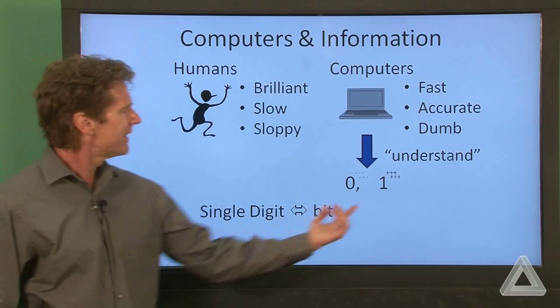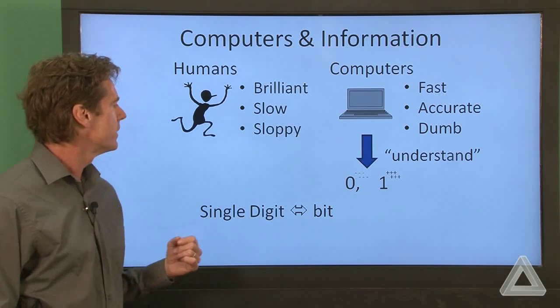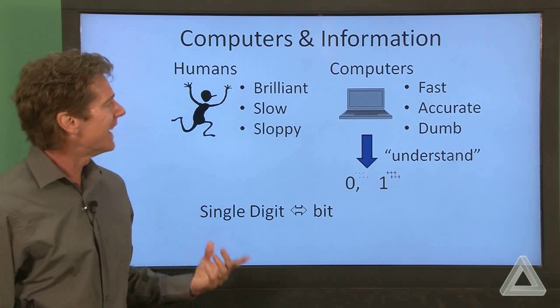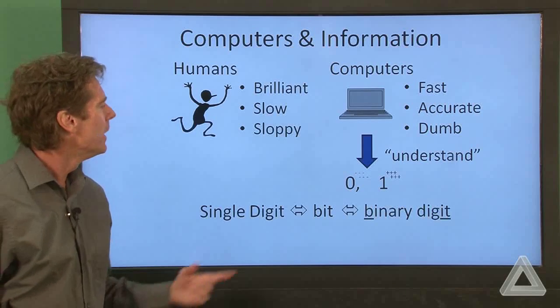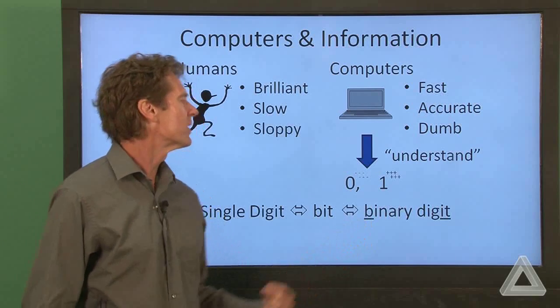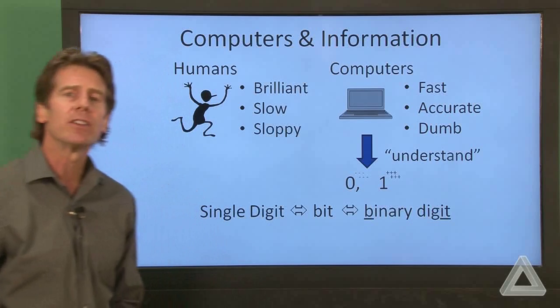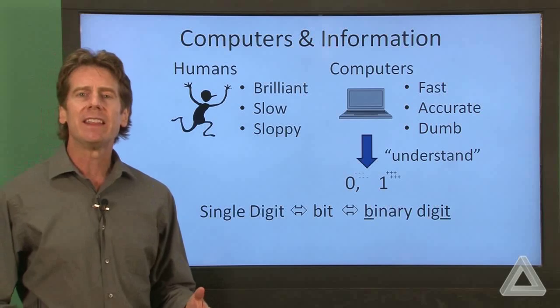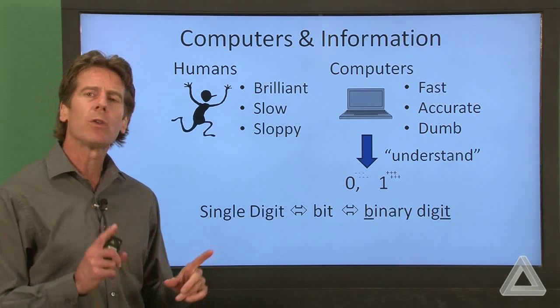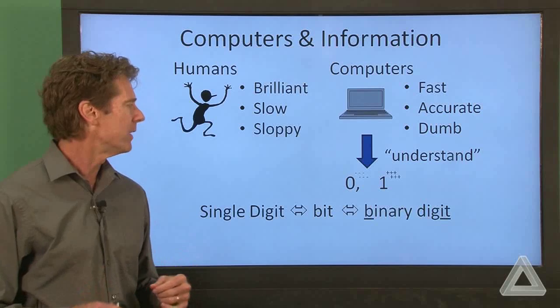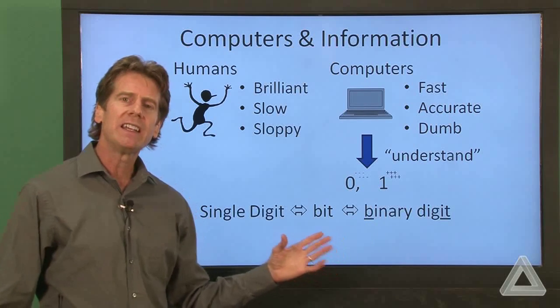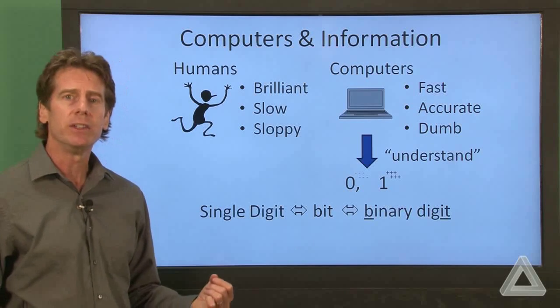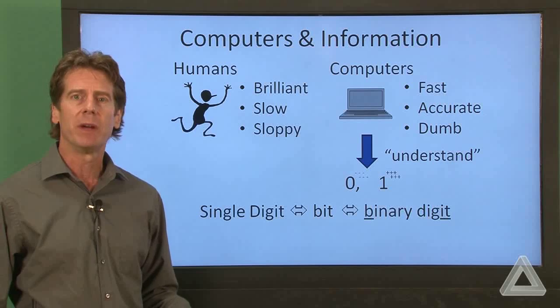This single digit that the computer can store or represent or that it understands is called a bit. And bit comes from the first letter of binary and the last two letters of digit. So a binary digit, when we're counting in the base two counting system, we only have the digits zero and one. We won't get into binary or base two counting system, but we do want to talk about the use of bits and the representation of information.